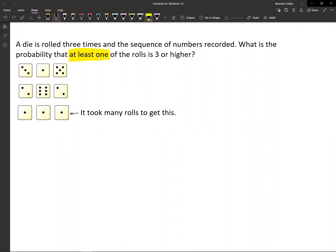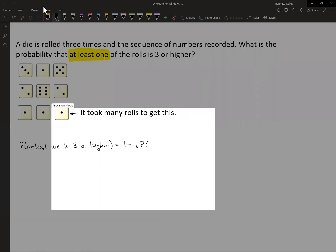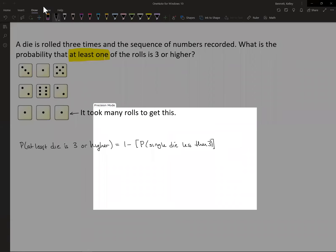For us, the way we're going to compute at least one is the probability of at least one die is three or higher is going to equal one minus the probability of a single die is less than three, and then we're going to raise it to the third power.